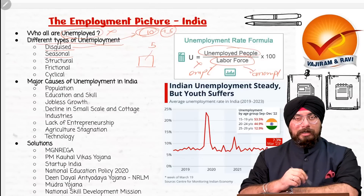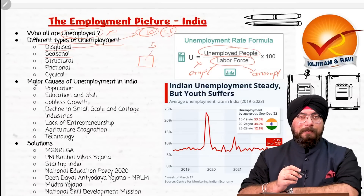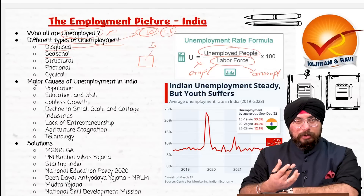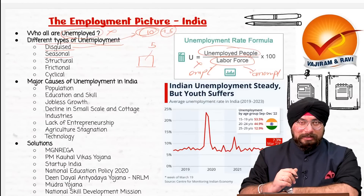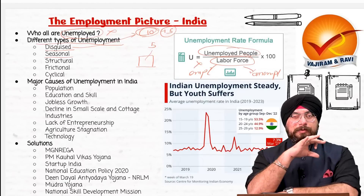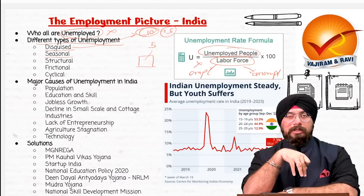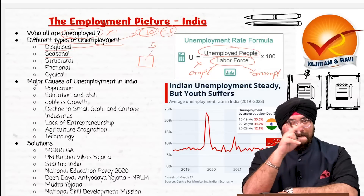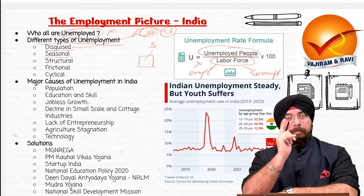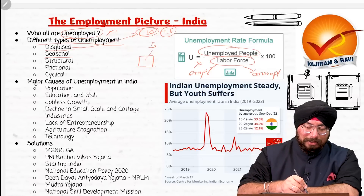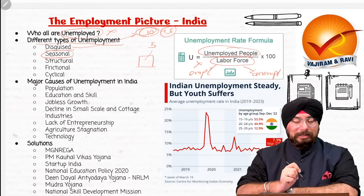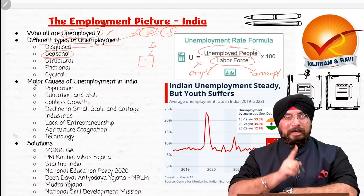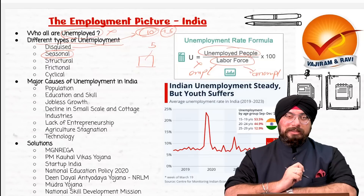Then seasonal unemployment, again seen in the agriculture sector. If a farmer is sowing rabi crops, he or she will be unemployed in the other season. If a person is sowing seasonal crops which only grow in a particular season of the year, and remains unemployed in the other season, that kind of unemployment is known as seasonal unemployment.